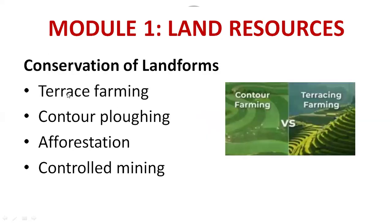Conservation of land forms — the different methods include terrace farming, contour plowing (also called contour farming), afforestation to promote more trees and plants, and controlled mining. These are the four important methods of land conservation. You may get essay-type questions, so kindly elaborate briefly on each.